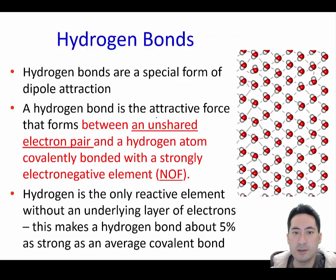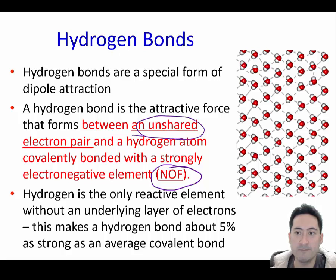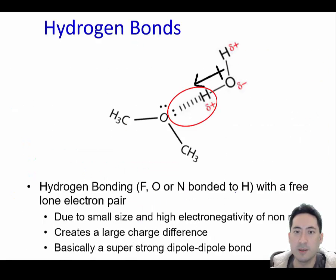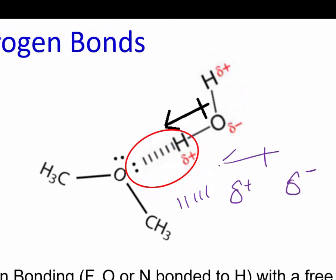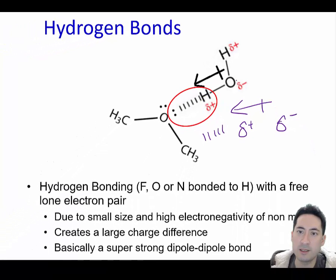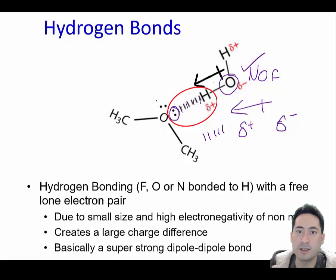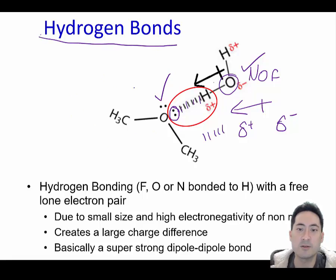Lastly are the strongest ones — hydrogen bonds. Make sure you know the definition well. The hydrogen is attracted to an unshared electron pair. This happens in water. This is how you should draw it: draw the dashed lines, show which one's positive and which one's negative, and include the dipole. You can see that's an O, so it has to be N, O, or F — that's ticking one box for hydrogen bonds. The second box is that it has found a lone pair somewhere and is attracted to that. So this is the special form of dipole-dipole bond that is extremely strong.